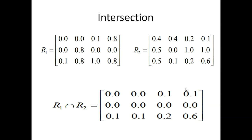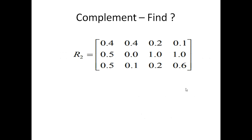For intersection, we take the minimum value — reverse of union. For example, min(0.0, 0.4)=0.0, min(0.0, 0.5)=0.0, min(0.1, 0.5)=0.1, and so on — we represent each minimum in matrix form. For complement, we calculate 1 minus each membership value: 1-0.4=0.6, 1-0.5=0.5, 1-0.2=0.8, 1-0.1=0.9, and represent these values in a new matrix.